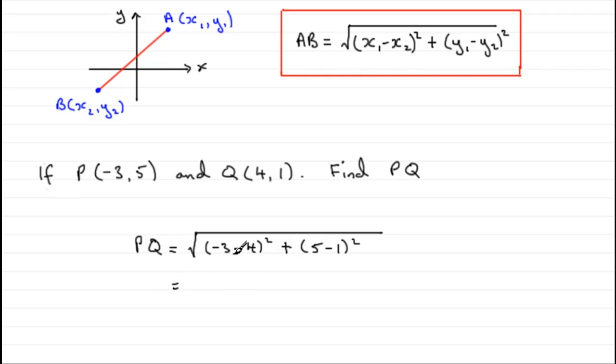So what have we got now? Well, minus 3 minus 4 gives me minus 7, but when squared it's going to be 49. 5 minus 1 is 4, 4 squared is 16, so we just need to square root that. And 49 plus 16 is 65, so we end up with root 65. And that doesn't square root exactly, so I'm just going to leave it as root 65 units.